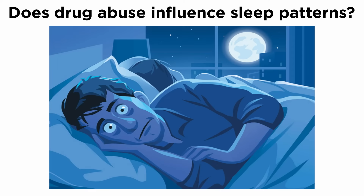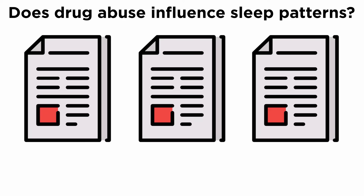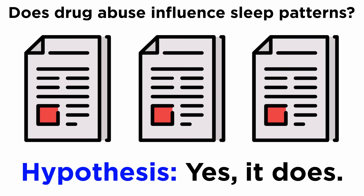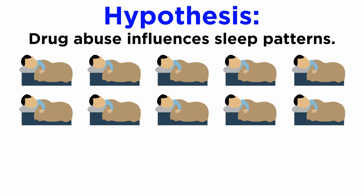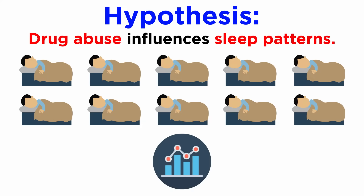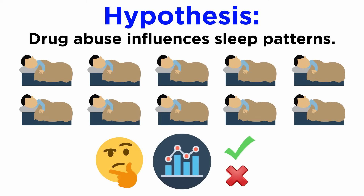Let us consider a research question: does drug abuse influence sleep patterns? In researching this topic, we'll have to study all the previous literature and form a hypothesis — yes, drug abuse does influence a person's sleep patterns. Then we will have to collect data related to drug abuse and sleep patterns from a sample of the population. By analyzing the data, we will understand the correlation between these two variables. In the last step, we'll interpret the results. Two types of inferences are possible: either the relation will be established or not. However, in both cases, we are contributing newer knowledge on this subject. Let's see how this is applied in reconstruction.